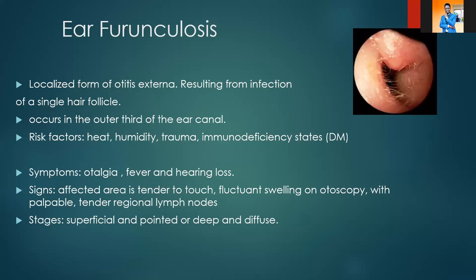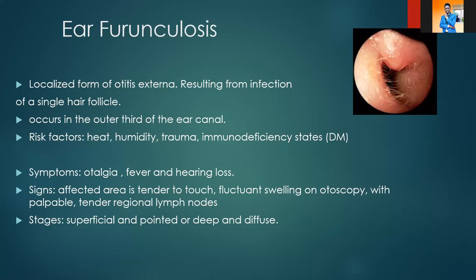On examination, you'll find tenderness on palpation of the pinna. If you have a plastic curette and you try to palpate the external ear canal in the affected area, you will be able to elicit tenderness. On otoscopy you'll see a swelling that is fluctuant. On lymph node examination, the patient might also have pre-auricular or level 2 cervical lymph nodes. The stages of a furuncle are superficial and pointed, or deep and diffuse.